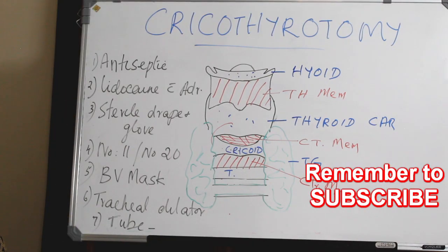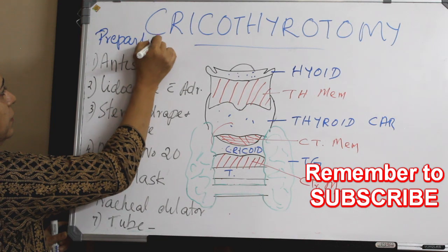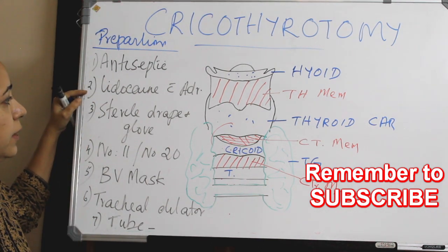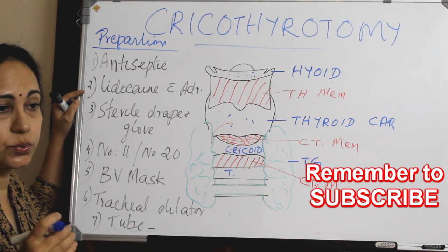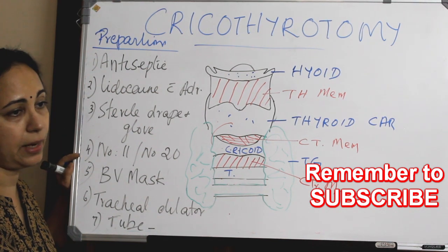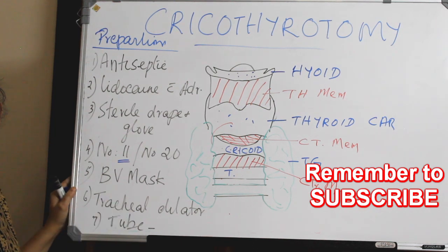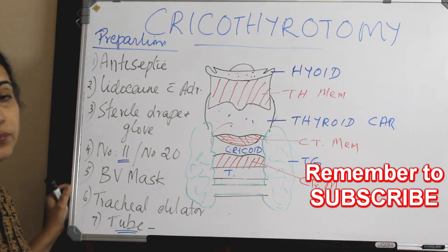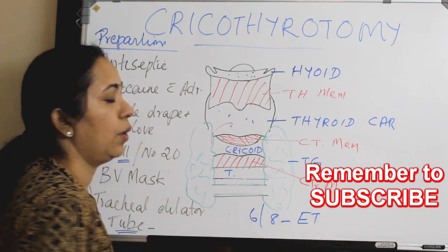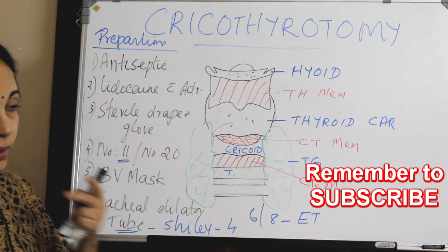For preparation, you need an antiseptic solution to clean the area, 1–2% Lidocaine with Adrenaline for infiltration, sterile drapes and gloves, ideally a number 11 or number 20 scalpel blade, and a bag-valve-mask ready. A tracheal dilator, if available, is a luxury. For tubes, a number 6 or 8 endotracheal tube can be used, or a Shiley tracheostomy tube — number 4 is preferred for cricothyroidotomy.